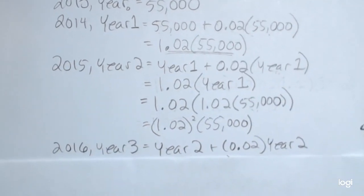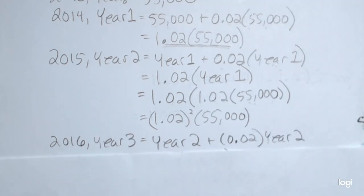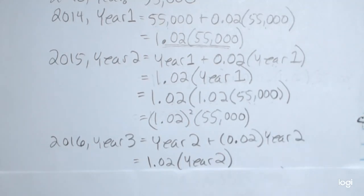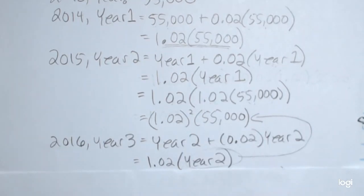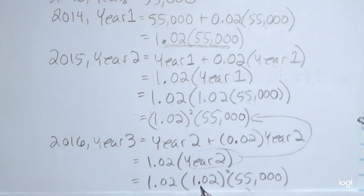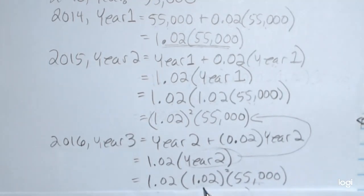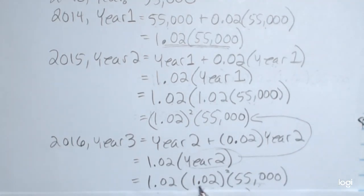Moving on to the next year, that would be year 2016, I'll call that year three. That's year two plus 0.02 times year two. Again, combining like terms, I get 1.02 times year two. But I know that year two is equal to 1.02 squared times $55,000. So plugging in for year two, I get 1.02 times 1.02 squared times $55,000. Again, I can combine by using the rule of exponents. The bases are the same, I add the exponents, I get 1.02 cubed times $55,000.